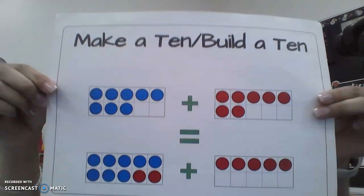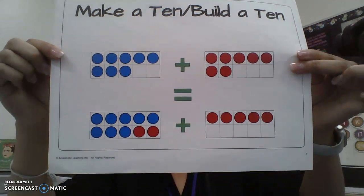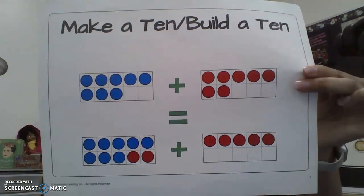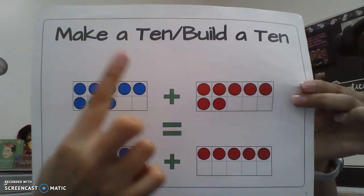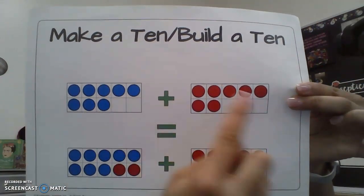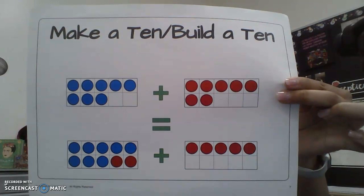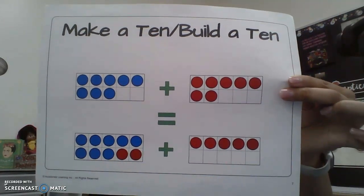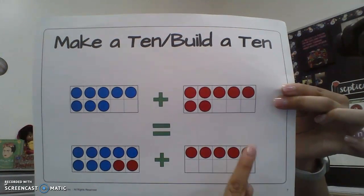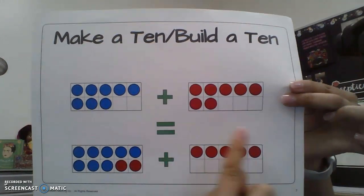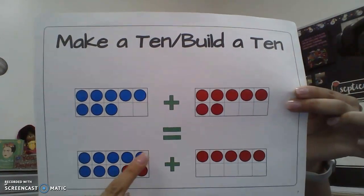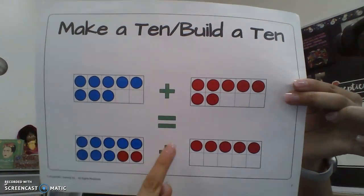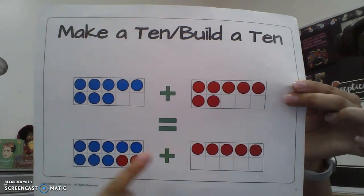Another vocabulary word is make ten. We all know how to use ten frames. If we have three blue counters and we add seven red counters, that equals ten. We can also represent it differently — two red counters and five red counters still make seven — and we still have eight blue counters. They are equal, just represented differently.